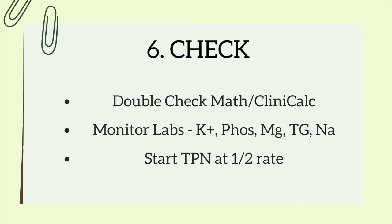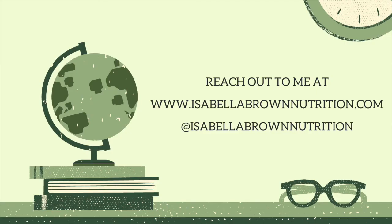The next day, check the labs again. If everything looks good, increase the rate by 15 milliliters per hour, though your hospital may have a different protocol — like advancing to 75% or something like that. Continue each day until at the goal rate. If labs are abnormal, hold the TPN, replete the electrolytes, and then continue at the same rate. It's important not to advance the TPN if electrolyte levels start to decrease or increase outside normal levels, because this can indicate refeeding syndrome. If you have any questions, feel free to reach out at IsabellaBrownNutrition.com or on Instagram at IsabellaBrownNutrition.